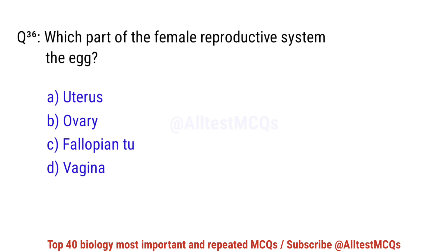Question number 36. Which part of the female reproductive system releases the egg? The right option is B: Ovary.